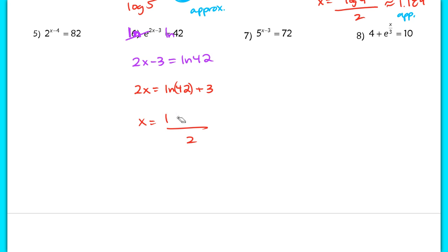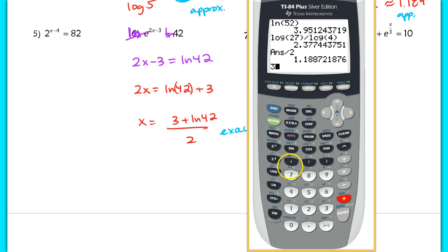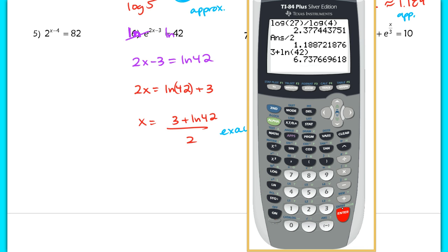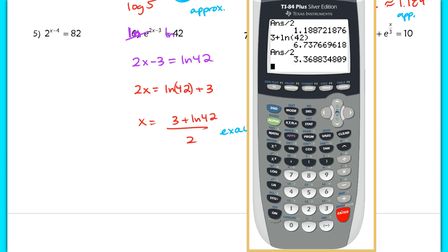Be careful with notation here — write it as 3 plus the natural log of 42, over 2, so it doesn't look like you're taking the natural log of 45. That expression is the exact answer. For the approximation, compute 3 plus natural log of 42, press enter, then divide by 2. The result is x is approximately 3.369.